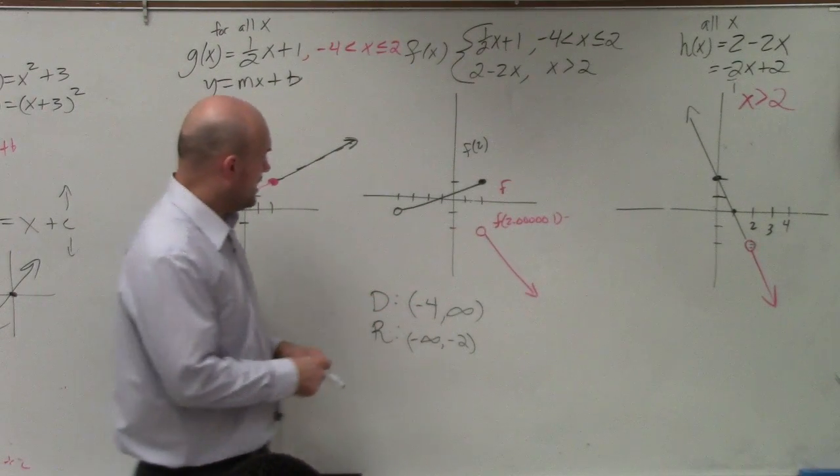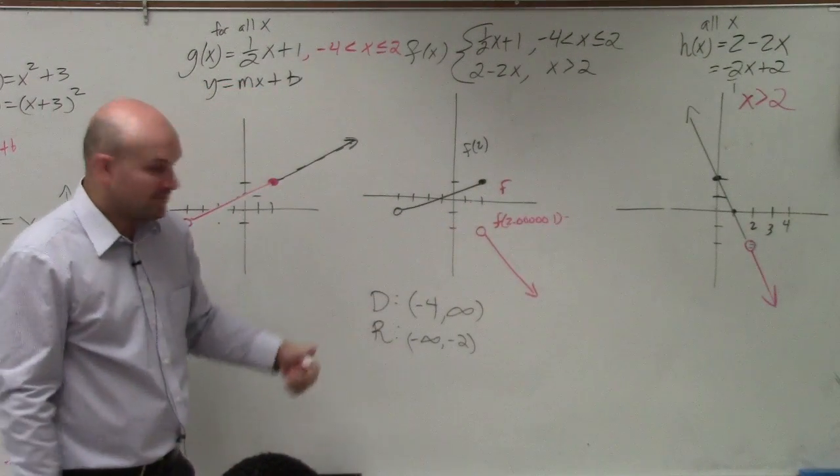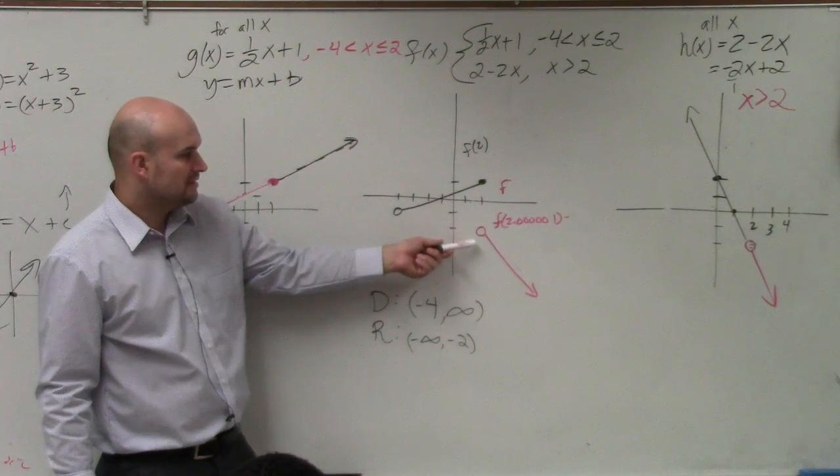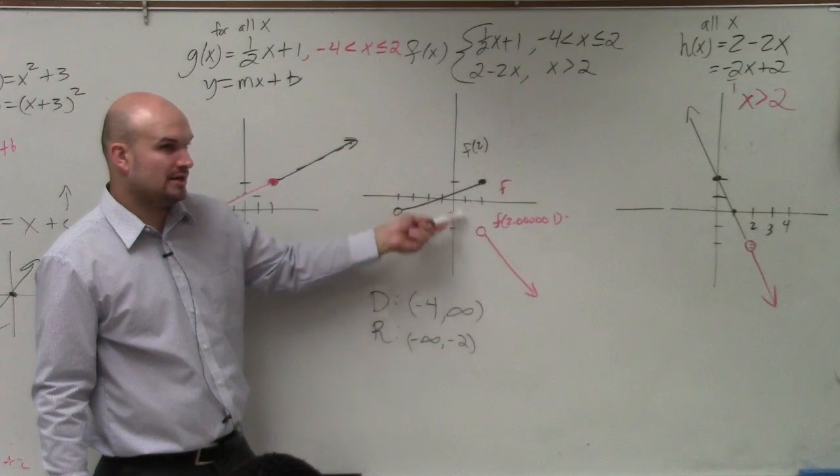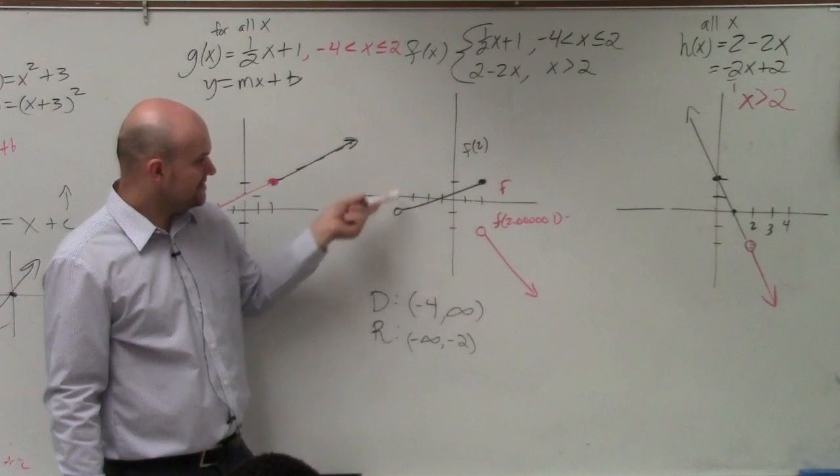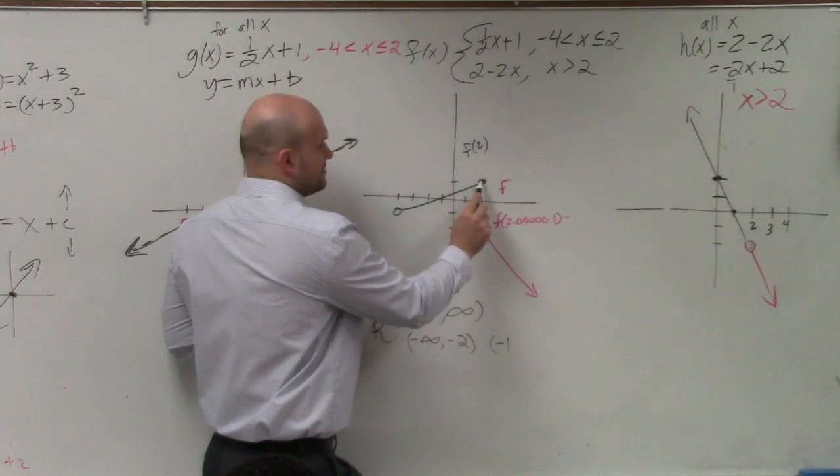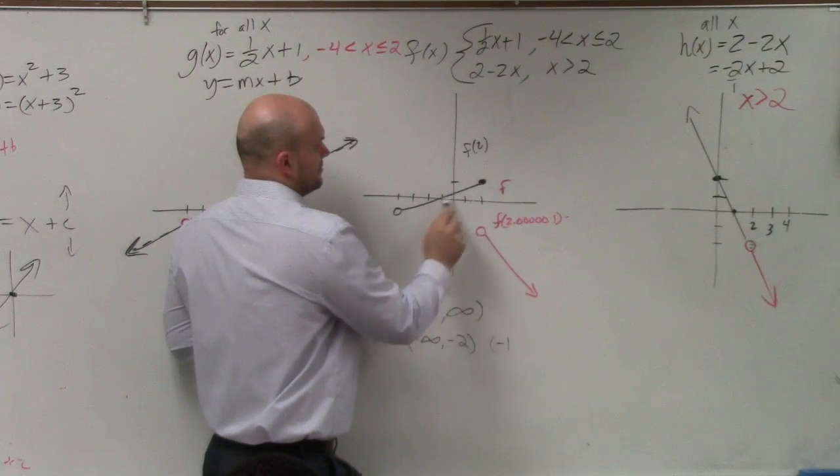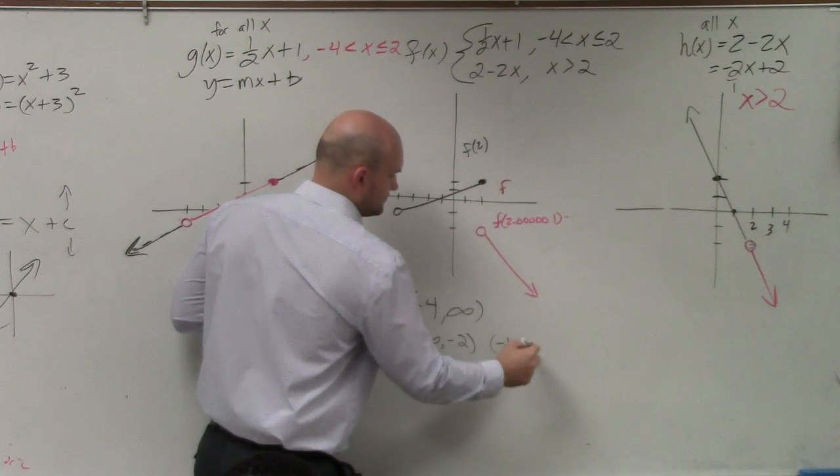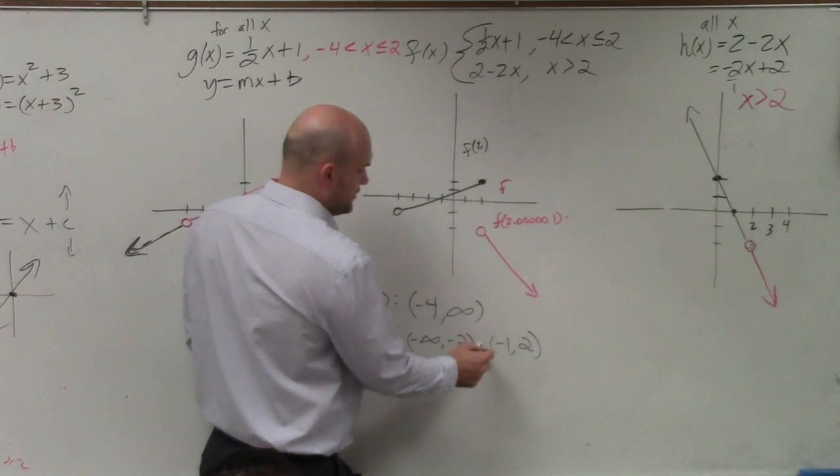OK, does you kind of see how that works? And again, this could be even smaller. But the range, we have an issue. Because the range, we go from negative infinity to negative 2. Then there's nothing between negative 2 and negative 1, right? There's nothing between negative 2 and negative 1. Then we start back at negative 1. And we go as high as, what was this value? 2. And we prefer to union them.